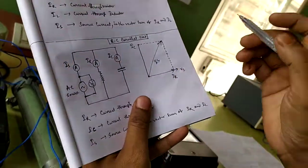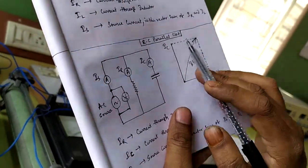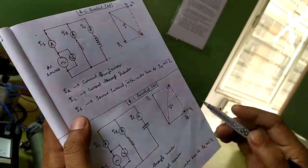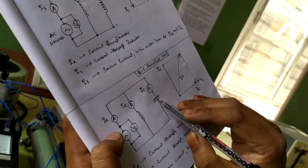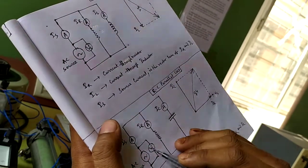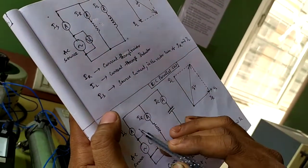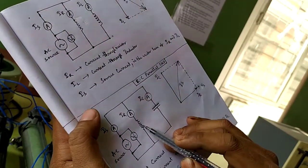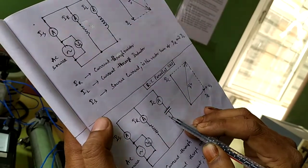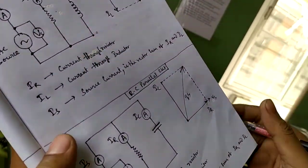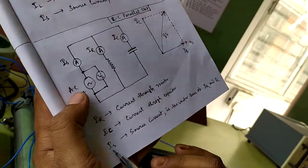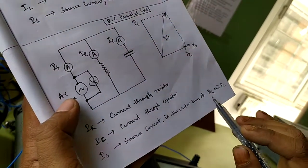Now for the RC parallel circuit, instead of the inductor L, a capacitor C is connected. The circuit is the same — the voltmeter measures source voltage, one ammeter measures source current, one measures resistor current denoted Ir, and another ammeter is connected in series with the capacitor for measuring capacitor current Ic. Is, the source current, is the vector sum of Ir and Ic.